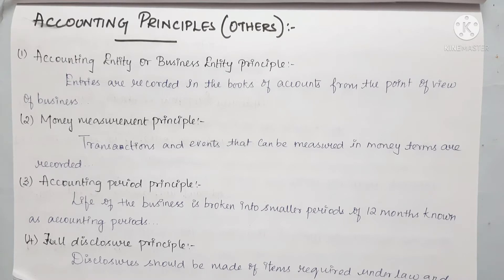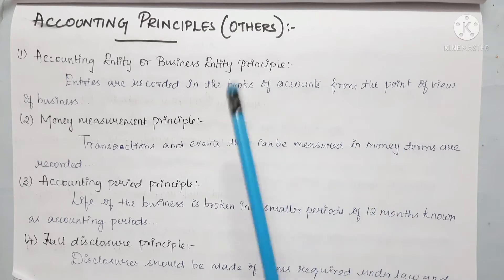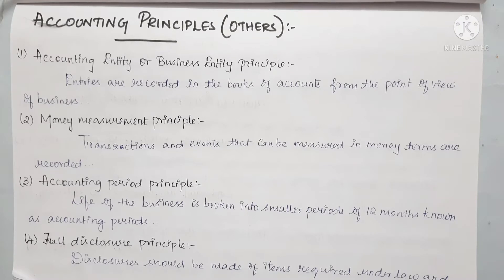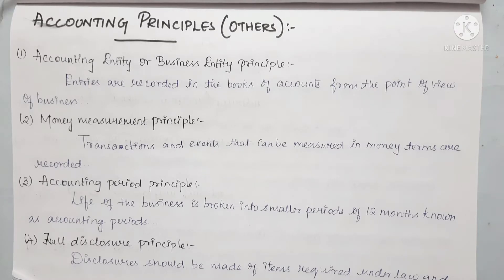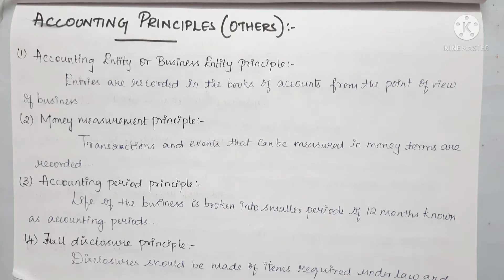First, we will talk about the accounting entity or business entity principle. Entries are recorded in the books of accounts from the point of view of the business. We talk about all expenses and all income from the business point of view. Business is a separate entity, and the owner is another entity — a separate person.